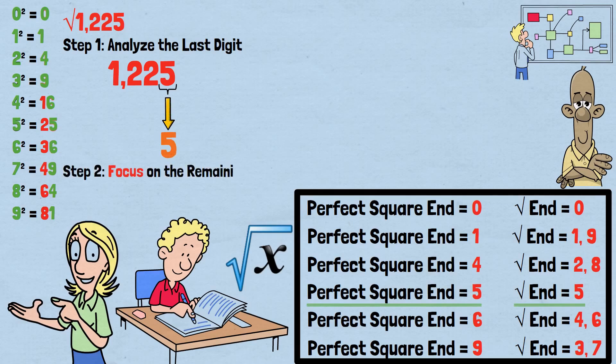Step 2: Focus on the remaining digits. Now we cross out the last two digits, 25, and focus on what remains: 12.